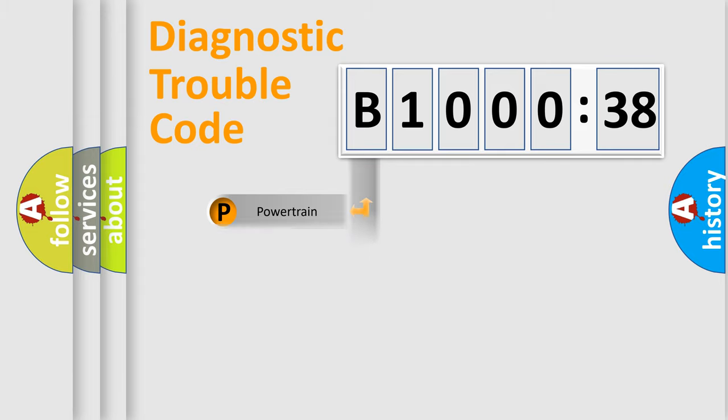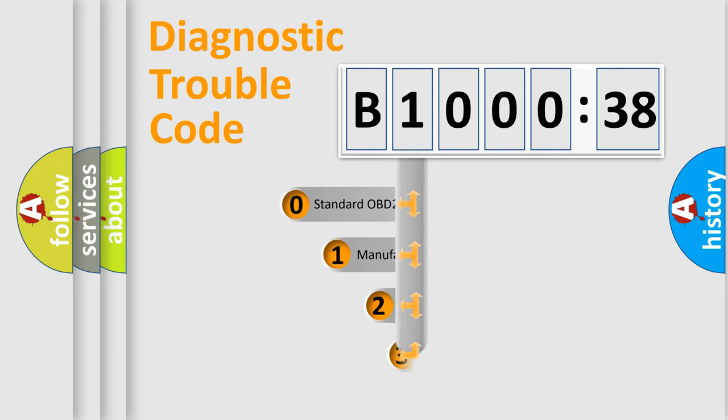Powertrain, body, chassis, and network. This distribution is defined in the first character code.